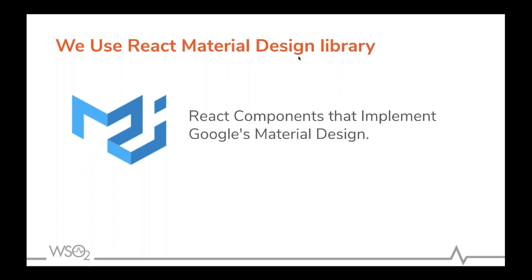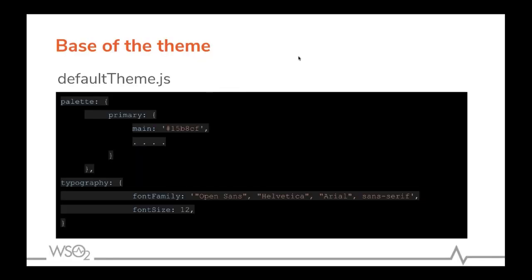We are using React Material Design library. Material Design is an Android-oriented design language created by Google. React Material Design is a React component library that implements Google Material Design and is the most popular and widely used React UI library. The base of the theme uses a single theme object throughout the application. We use this as the base of our theme — this JSON object is injected into the web application at runtime. It's a JSON with key-value pairs such as font family, primary color, logo URL, and so on.